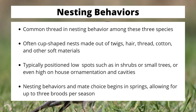Regarding nesting behaviors for these three species, they essentially have the same approach: they create a cup-shaped nest made out of twigs, hair, thread, cotton, and whatever material they think is best suited. In a human environment, you'll see a lot of different materials in there. Usually nests are positioned lower — in shrubs or small trees — and you can even find them on ornamentation on your house, signs, or on businesses. Nesting behaviors and mate choices usually begin in spring. You can get up to three broods per season depending on food availability and drought conditions.